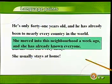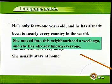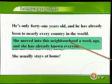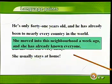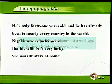再来看一个例句：She moved into this neighborhood a week ago, and she has already known everyone. 她一个星期以前才搬来这个街区住的，但是现在她几乎已经认识了所有的人。